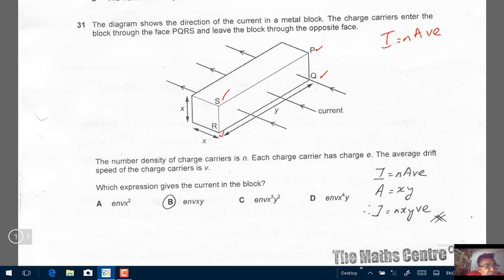The number density of charge carriers is N. Then we have a charge of E. The average drift speed is V. Which expression gives the current in the block?